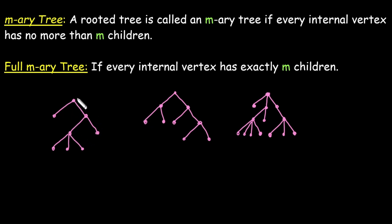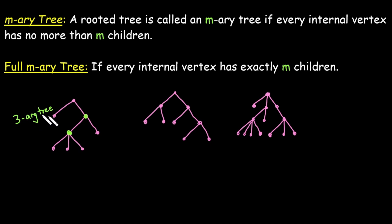In the first figure, the first internal vertex is the root. It has two children. This internal vertex has further two children, and this internal vertex has three children. So the maximum number of children in this case is 3, so we can say it is a 3-ary tree. Now, is this a full 3-ary tree? Does every internal vertex have exactly 3 children? No. So it means it is a simple 3-ary tree.